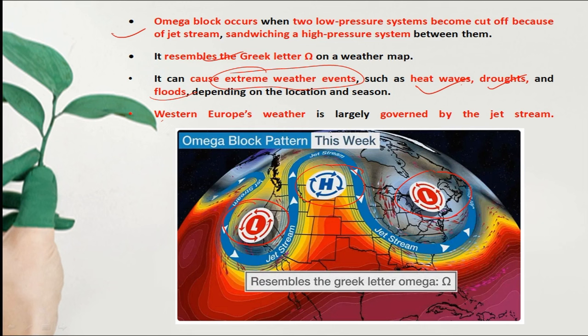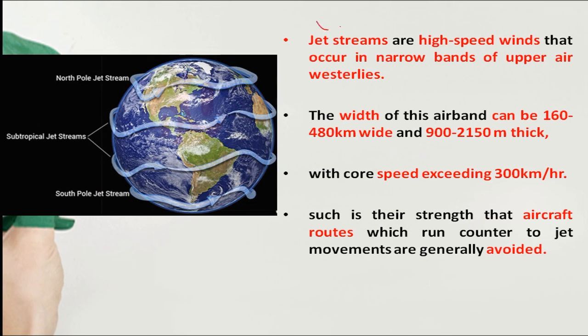Omega Blocking is mainly responsible for the jet stream, so we need to understand the jet stream. These are horizontal wind systems, mainly four types: North Pole jet stream, South Pole jet stream, and subtropical jet streams.